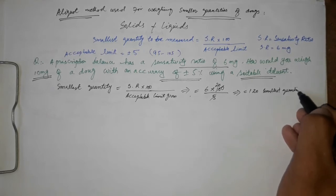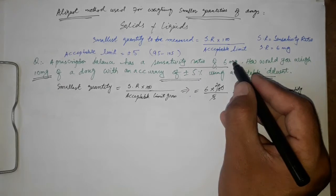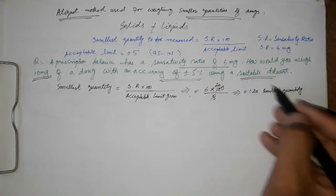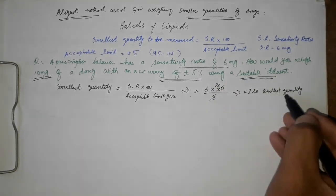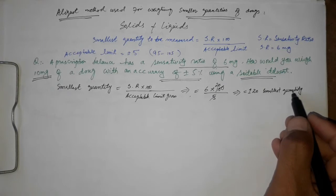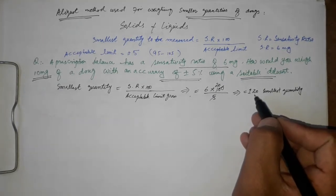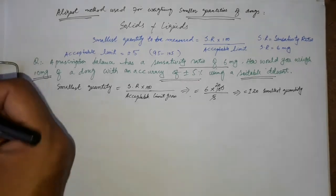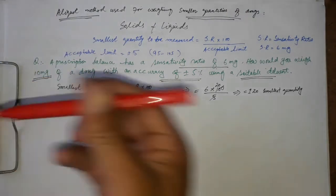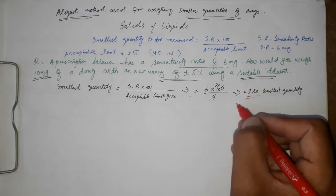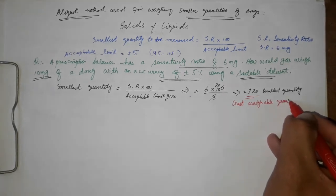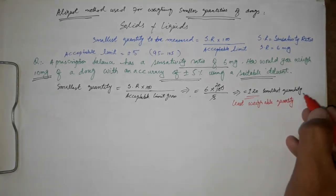So 6 multiplied by 100 divided by 5 equals 120 milligram. This is the smallest quantity which can be measured on this prescription balance, which has a sensitivity ratio of 6 milligram and an accuracy limit of plus or minus 5 percent. So 120 milligram is the least weighable quantity for our balance.